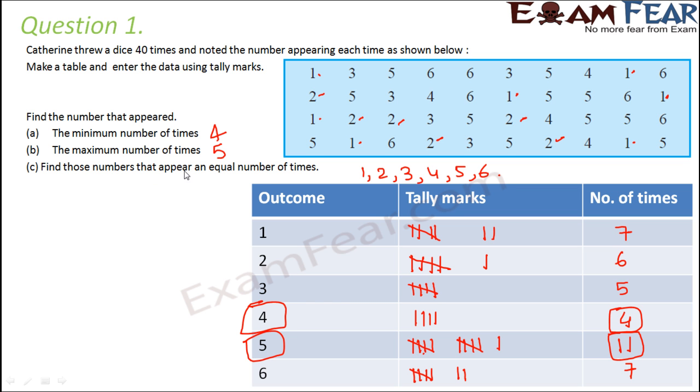Find those numbers that appear an equal number of times. Do you see same number of times for 2 numbers? Yes, we do see that. 7 - so 1 was repeated 7 number of times, and 6 was also repeated for 7 number of times. So 1 and 6.